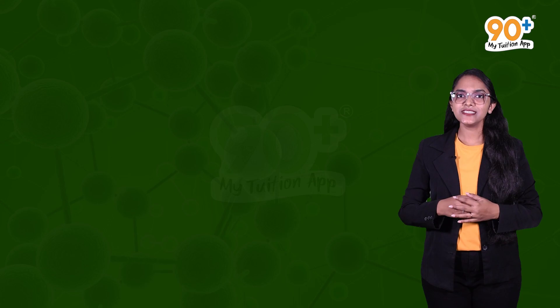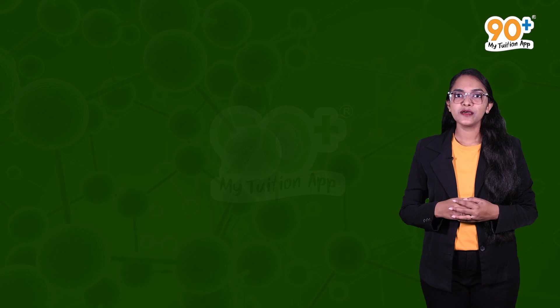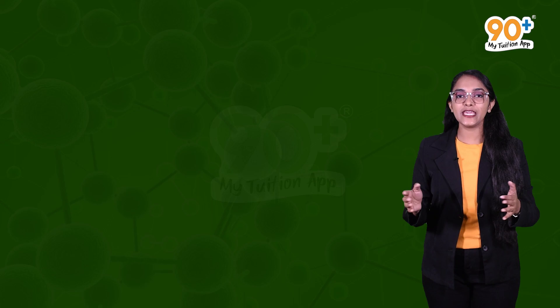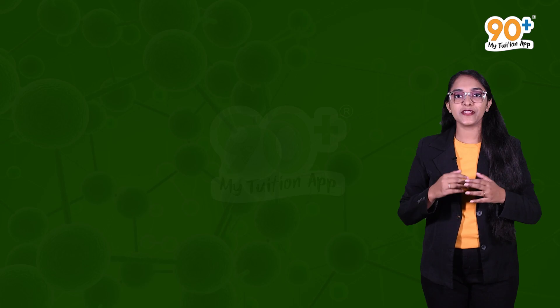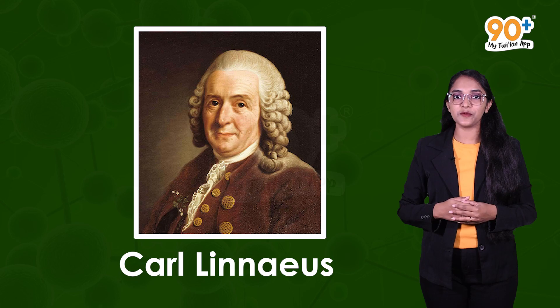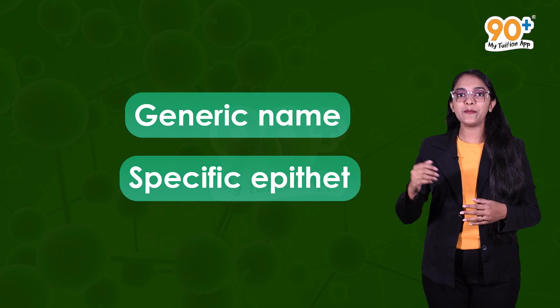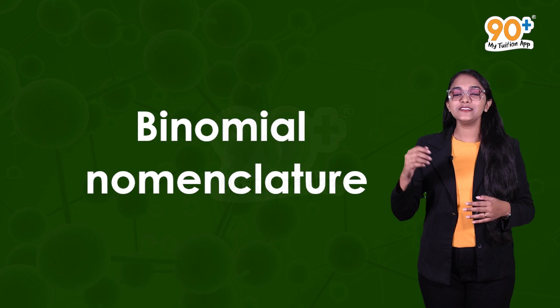Just like we have first and second names — like Akash Sharma or Virat Kohli — biologists follow universally accepted principles to identify and name organisms. It was Karl Linnaeus, the father of taxonomy, who introduced the naming of organisms. According to his rules, each name has two parts: a generic name and a specific epithet — the genus name and the species name. Since it has two components, this system is called binomial nomenclature.